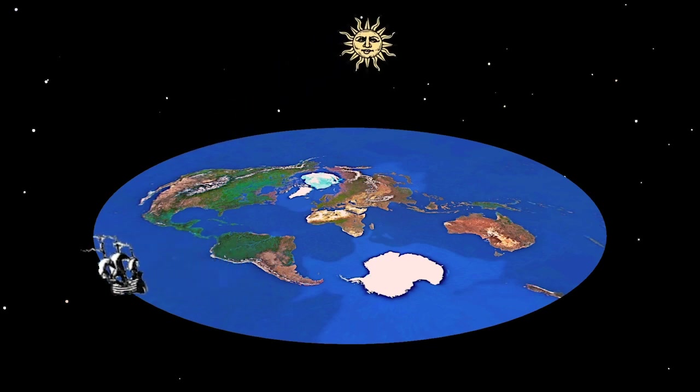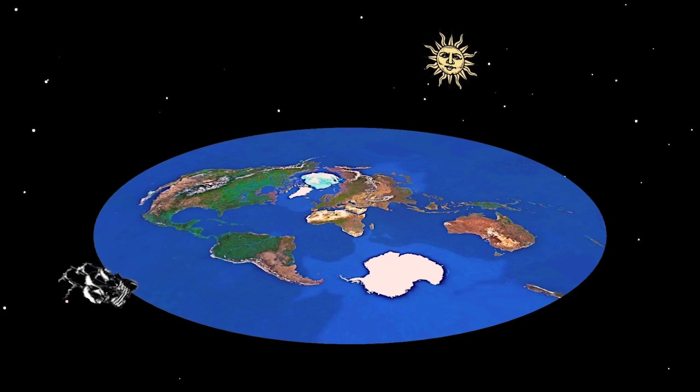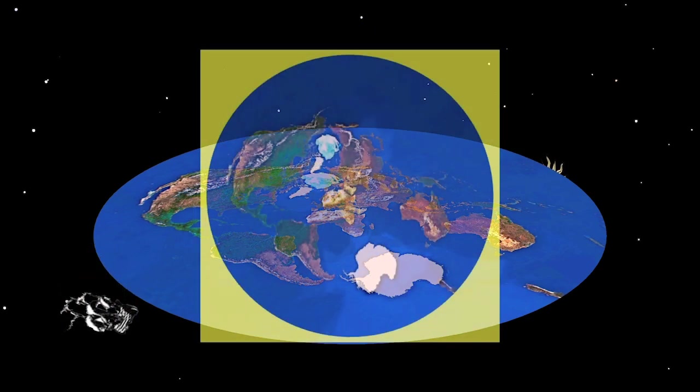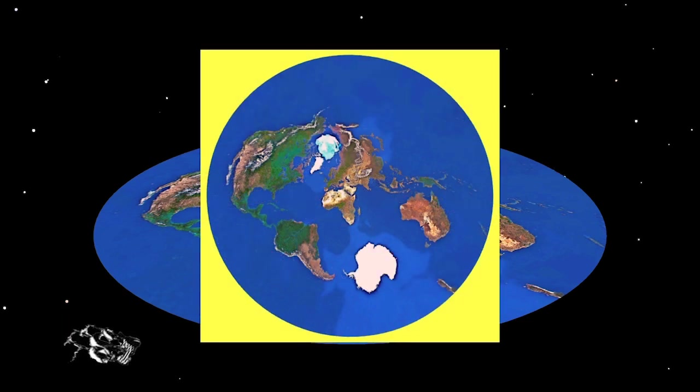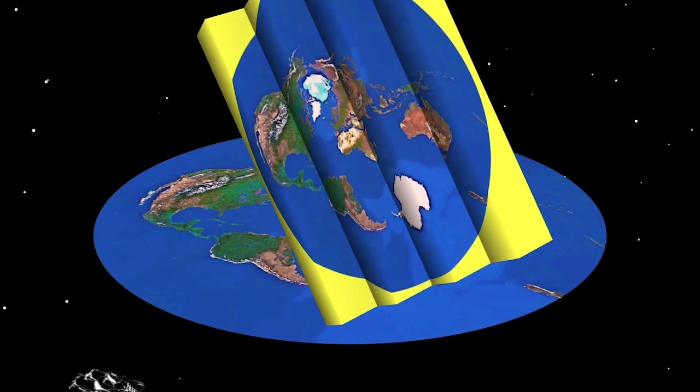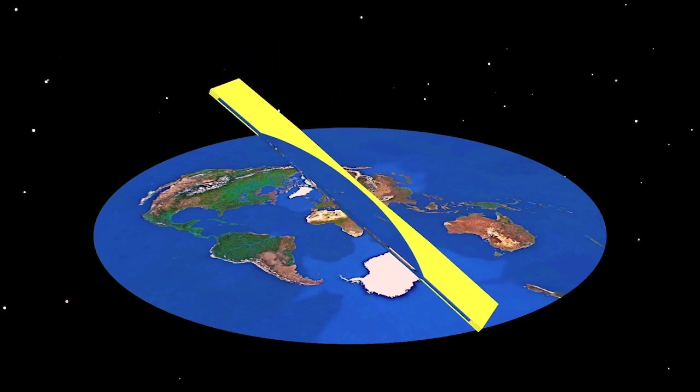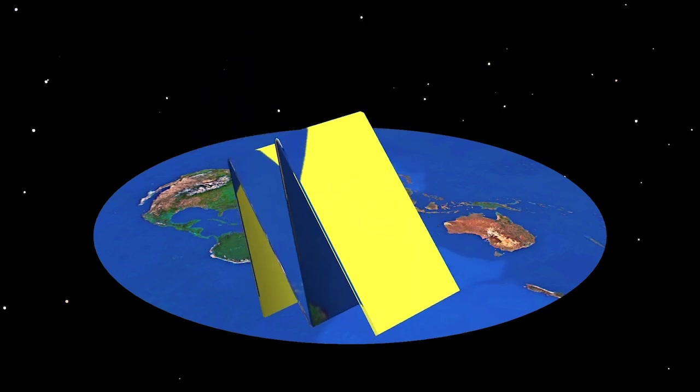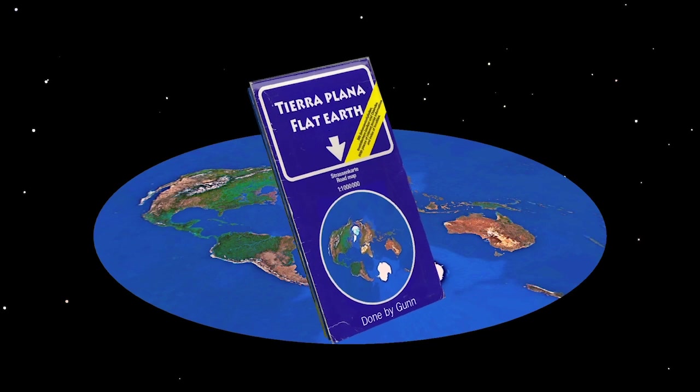As long as the Earth was flat, mapmakers had it easy. By scaling the actual dimensions uniformly in all directions, they could produce accurate, flat maps of the Earth, easy to print, fold up, or bind into atlases.